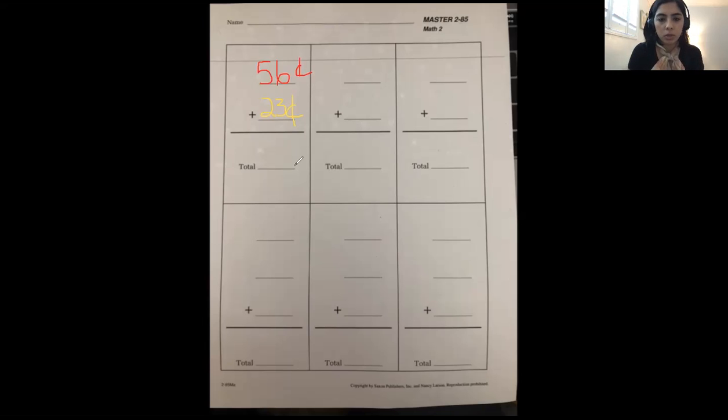The first thing that we're going to do is we're going to write the cent sign. So we're going to go here. Six plus three equals nine, and five plus two equals seven. So our answer is 79 cents.